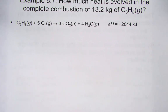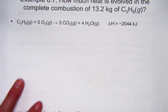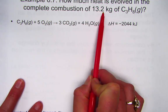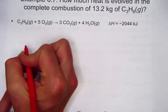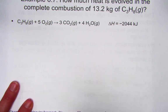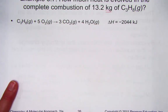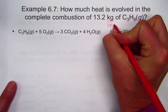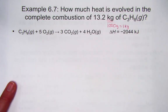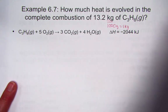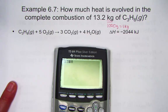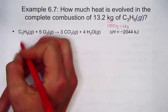Let's model Example 6.7: how much heat is evolved in the complete combustion of 13.2 kilograms of propane? The kilogram should be converted into grams before entering our stoichiometry roadmap. Since kilo means 1000, we multiply 13.2 by 1000 — sliding the decimal gives us 13,200 grams. That's where we'll begin.